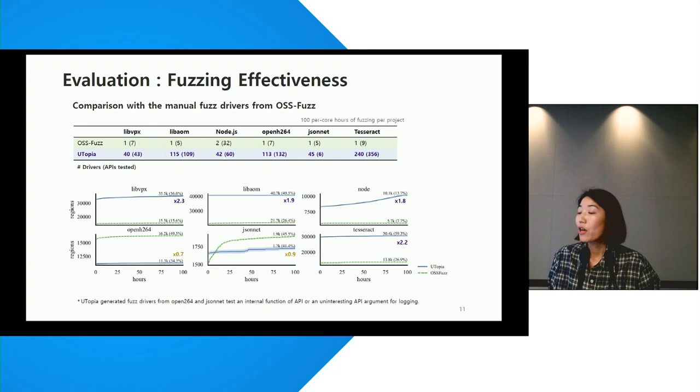The effectiveness of Utopia's fuzzing was evaluated by comparing it to OSS fuzz manual fuzzers. Utopia was found to be generally more effective than OSS fuzz, producing dozens more fuzz drivers and testing hundreds more APIs. The blue line in the graph represents Utopia, and the green line represents OSS fuzz. The results showed Utopia achieving roughly twice the coverage.